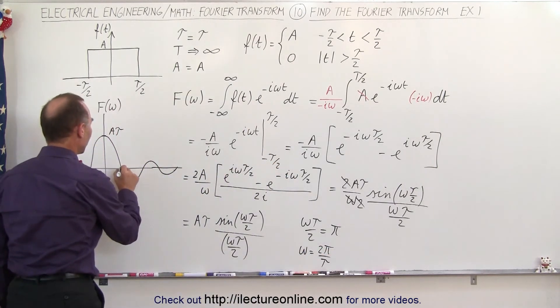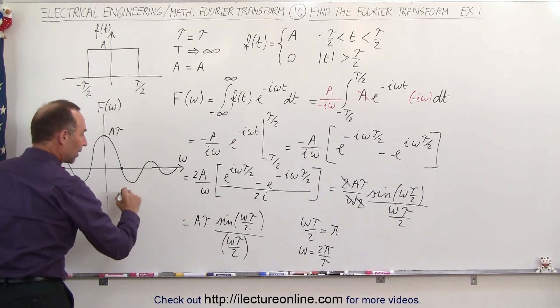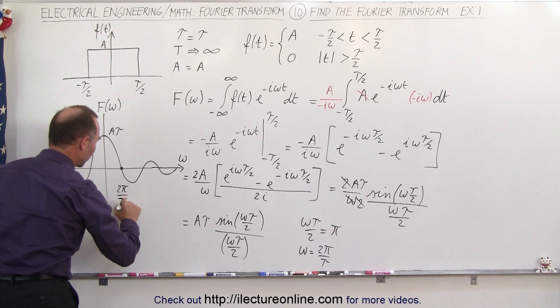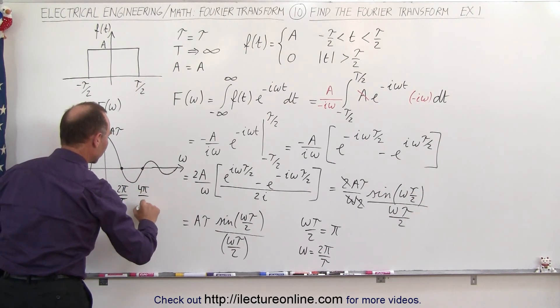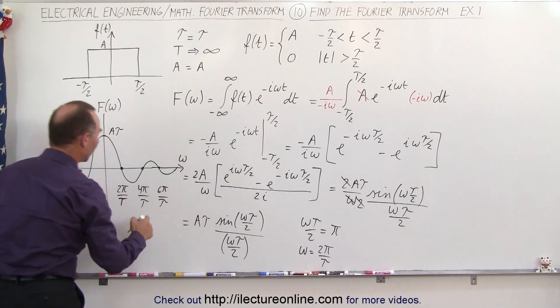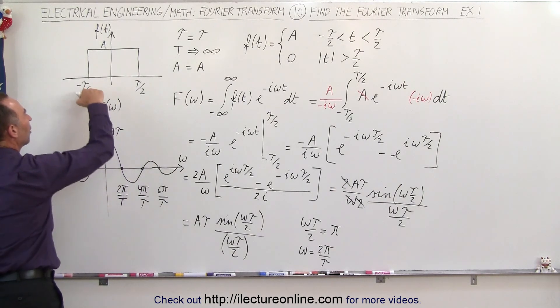And so that means that this point right here, which is on the frequency axis, this point right here will be equal to 2 pi over tau—not period but tau. So this point right here will be at 4 pi over tau, this point right here will be at 6 pi over tau.